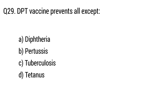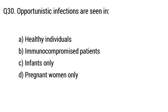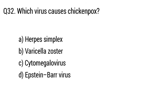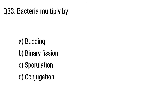Question 29: The BCG vaccine prevents all except? The right answer is option C, tuberculosis. Question 30: Opportunistic infections are seen in? The right answer is option B, immunocompromised patients. Question 31: Which bacteria forms spores? The right answer is option B, Clostridium. Question 32: Which virus causes chickenpox? The right answer is option B, Varicella-zoster.